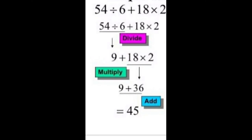Now one more example is on your screen children: 54 is divided by 6 plus 18 into 2. So first you will do division — divide 54 by 6 — and you have got 9. Then you will multiply 18 by 2. You have got 36. And at last you will add 9 and 36. After addition you have got 45.